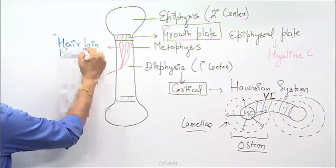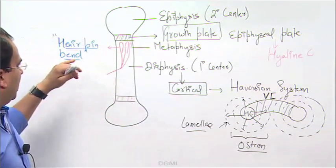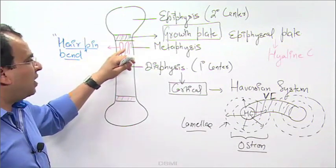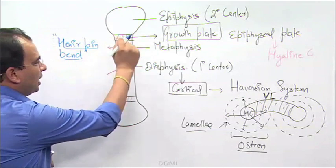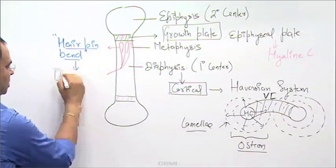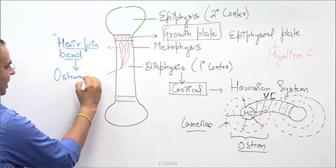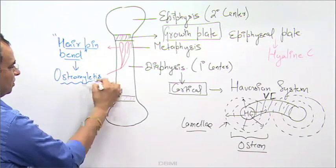This hairpin bent, which is an extremely important point, is an important feature of the arteries present in the metaphyseal region. Because bacteria could get lodged over here and can cause osteomyelitis.